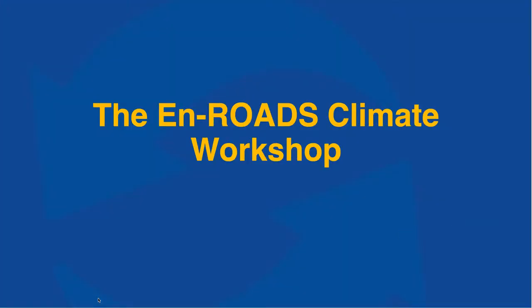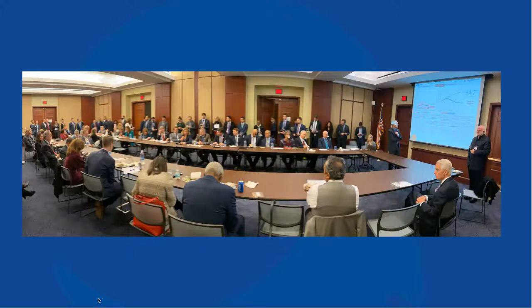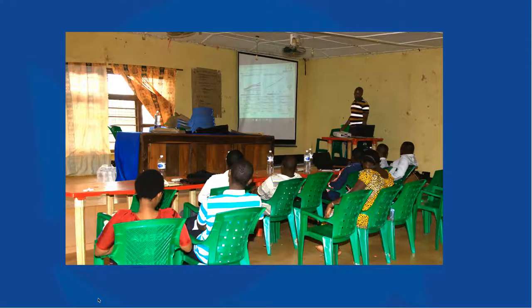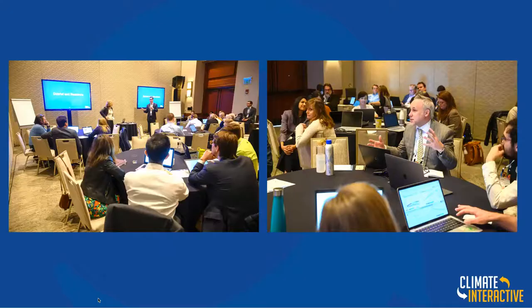Let's start with the En-ROADS climate workshop. The classic structure is one or two facilitators showing En-ROADS with a table of people — five, 20, 30 — thinking together about what to do about climate change. Perhaps it's an informal group gathering at a community scale, perhaps it's a classroom, but with that same structure of a facilitator helping people think through actions to address climate.